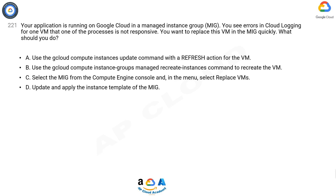A: Use the gcloud compute instances update command with a refresh action for the VM. B: Use the gcloud compute instance-groups managed recreate-instances command to recreate the VM. C: Select the MIG from the Compute Engine console and in the menu select Replace VMs. D: Update and apply the instance template of the MIG.